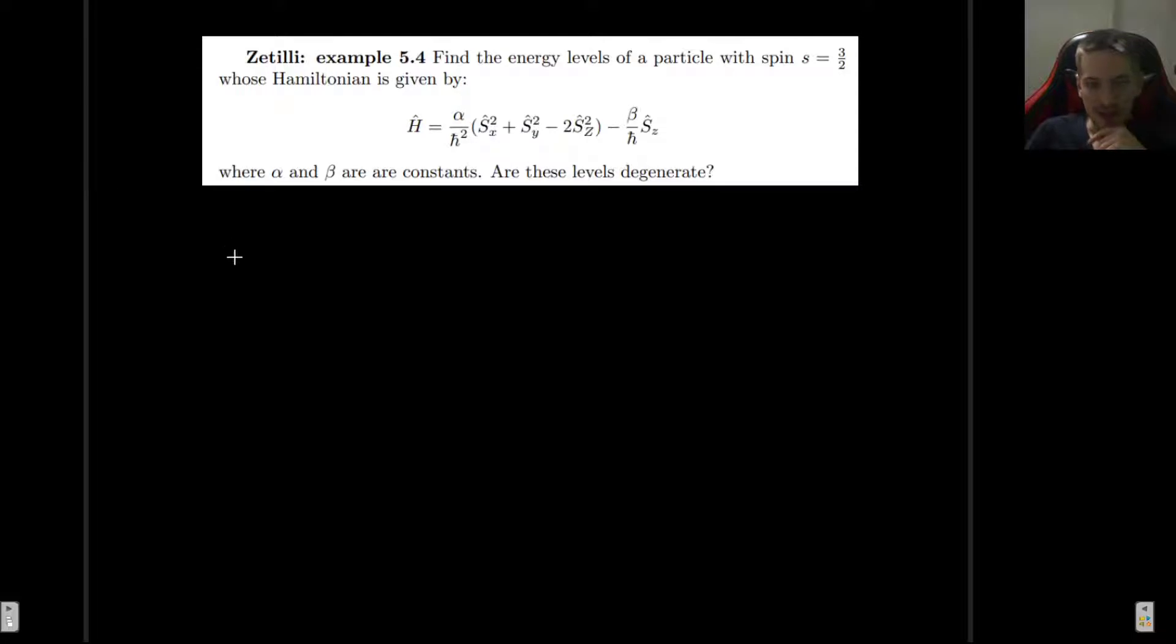And the Hamiltonian, well, we know this is a Hermitian operator. So the expectation value of the Hamiltonian is going to be the same as the eigenvalue of the Hamiltonian. So the way to find it is simply to take the expectation value of the Hamiltonian.